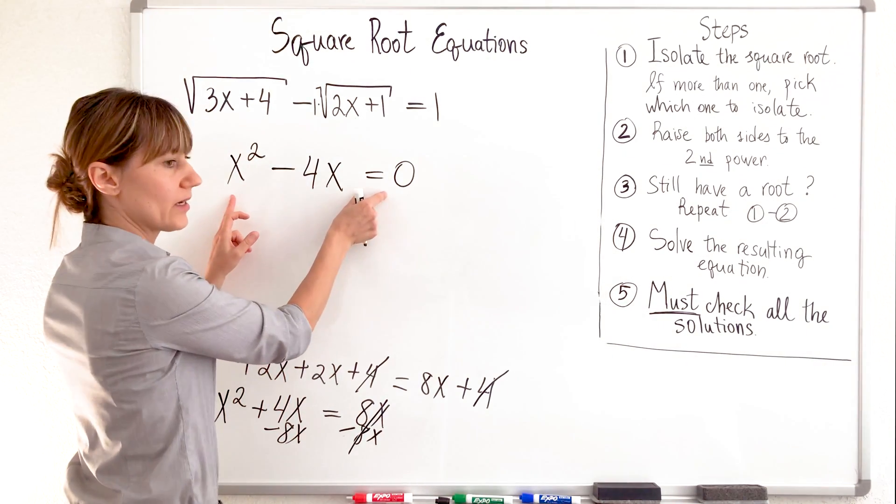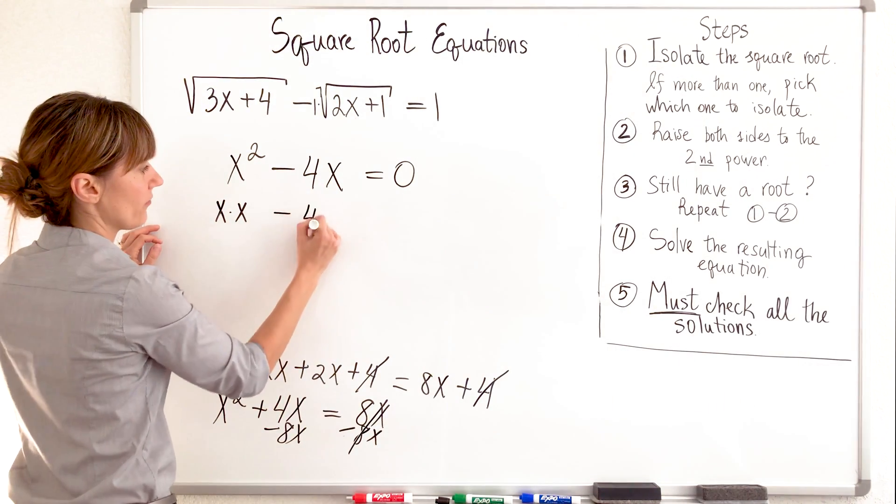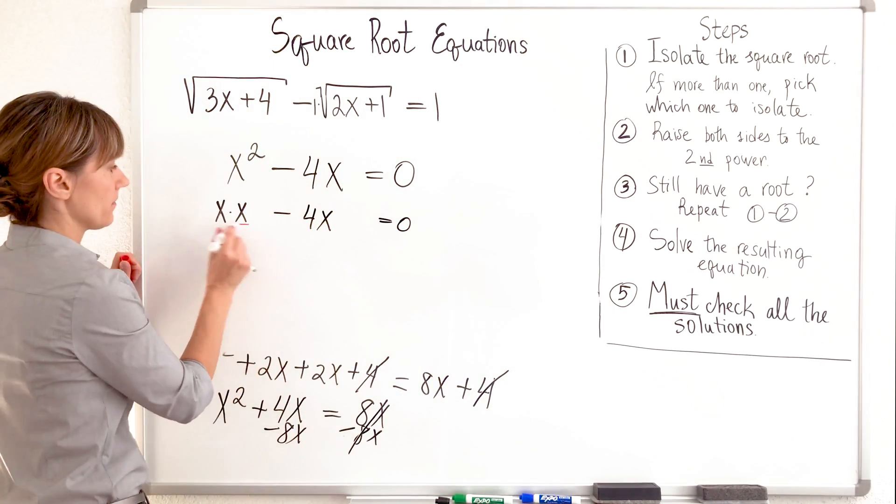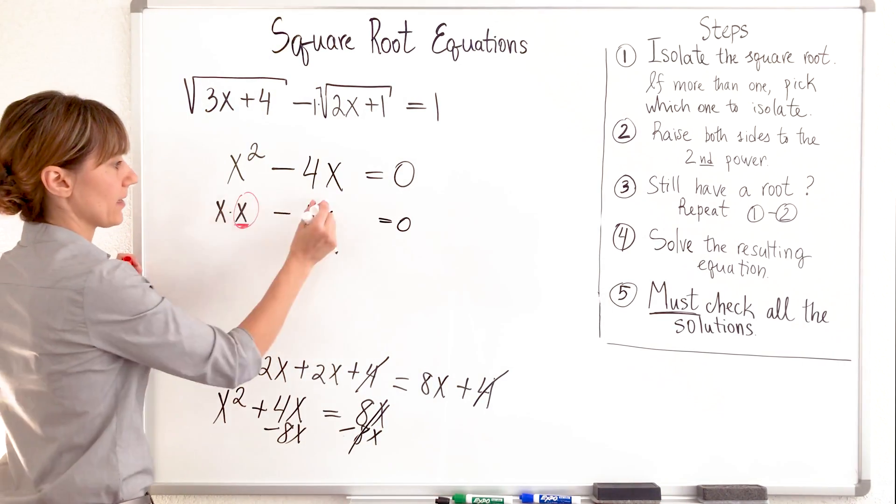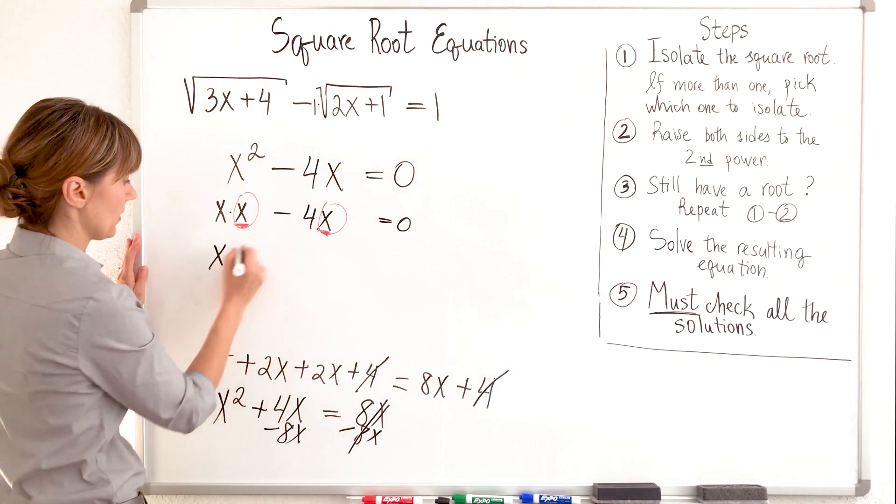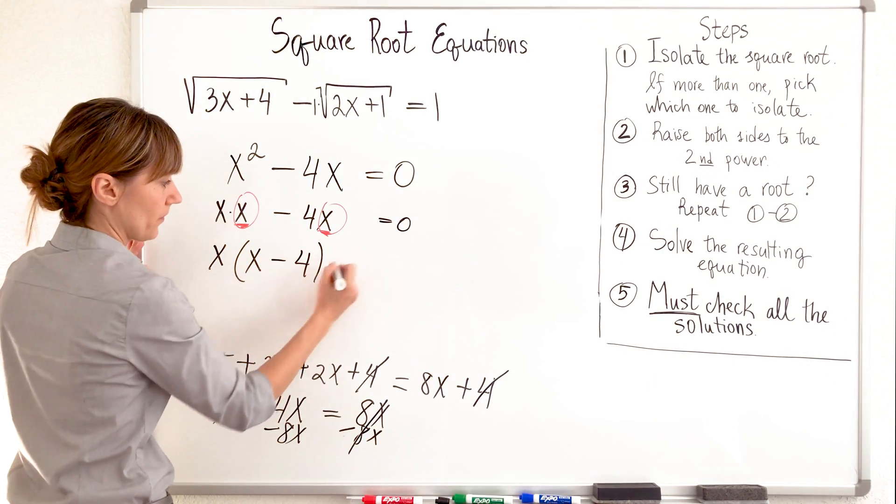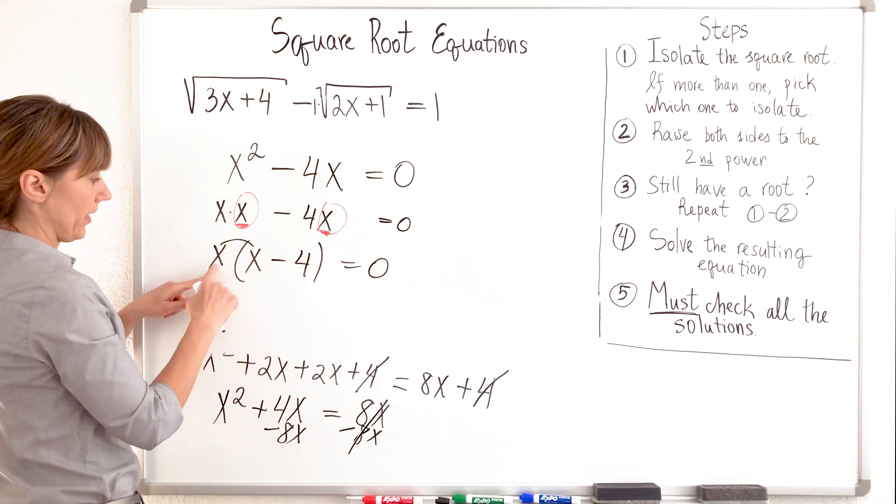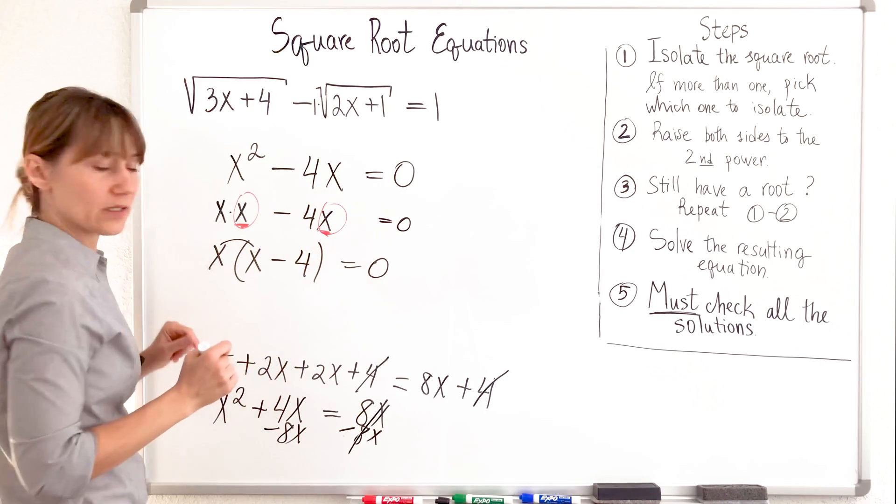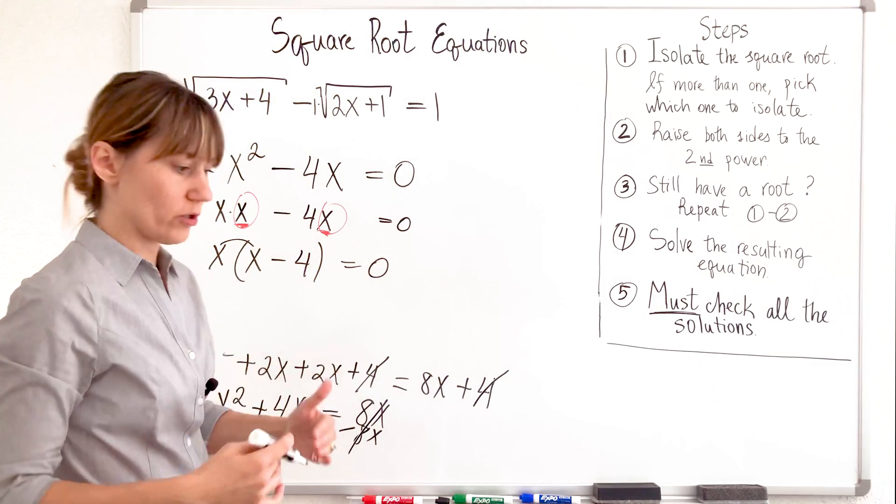What do I have? I have x times x minus 4x equals 0. These two terms share x. I'm going to take that x out and factor it. Factor it out. So x, I will be left with x minus 4 in the parenthesis. How do I know? I can check back. x times x will give me x squared. x times negative 4 will give me negative 4x. Are we on the same page? Check your work.